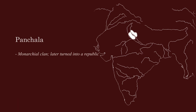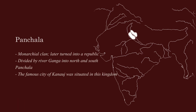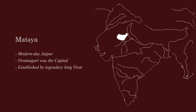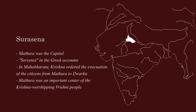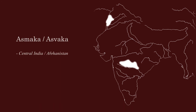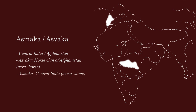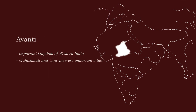Panchal was located around the river Ganga, which divided it into North Panchal and South Panchal. The famous city of Kannauj was also situated in this kingdom. Matsya is said to be located in present-day Jaipur, ruled over by the legendary king Virat from the capital city of Virat Nagari. Surasena was located around the banks of the river Yamuna. The Greek accounts called Surasena as Surasenoi and Mathura as Mathura. Avanti was an important kingdom of western India, ruled from the capital city of Mahishmati.